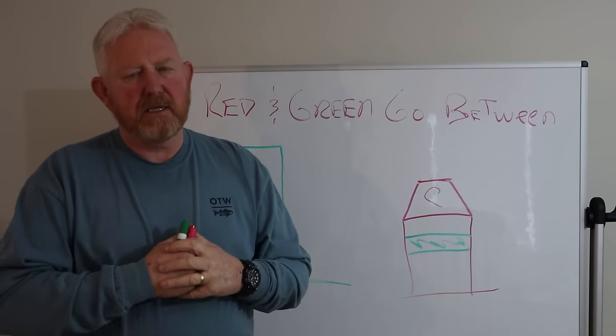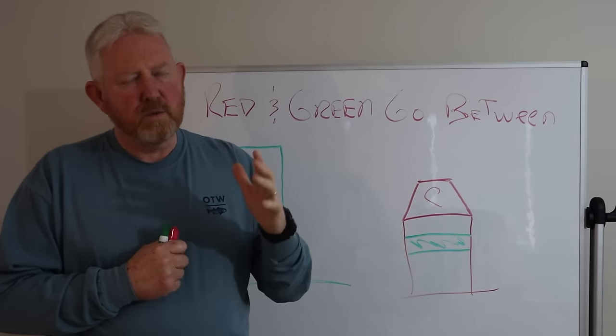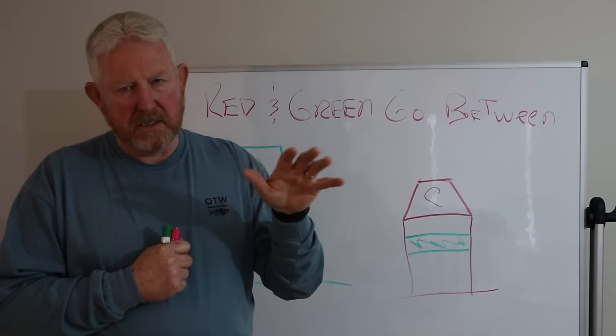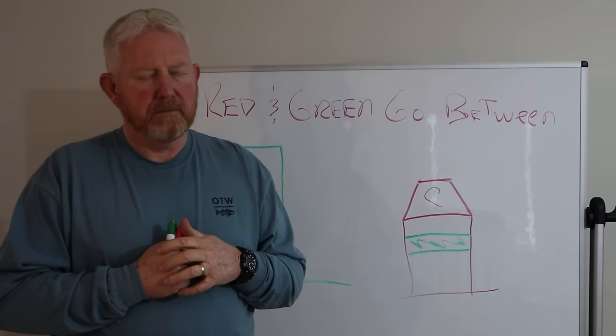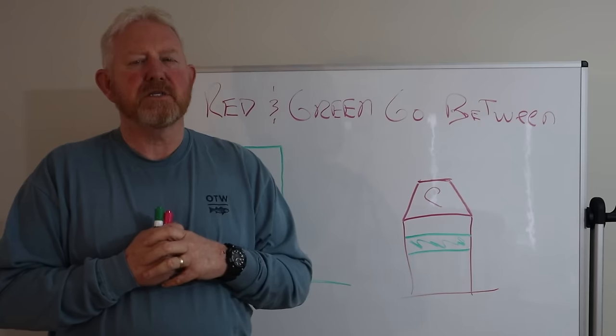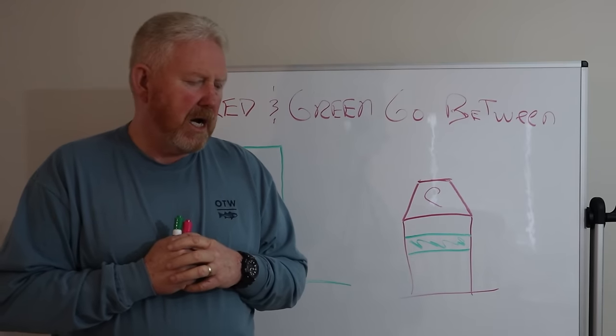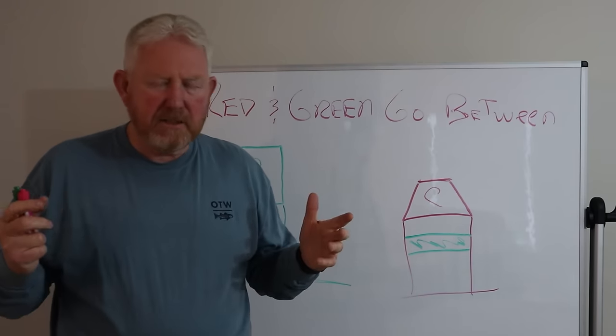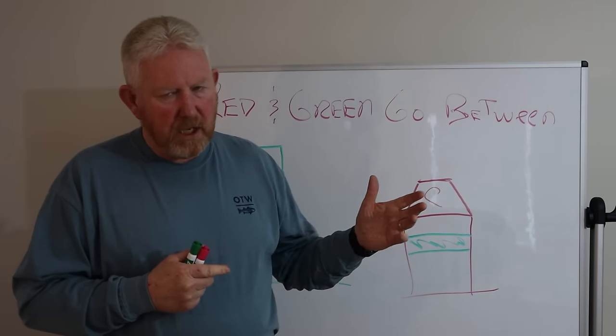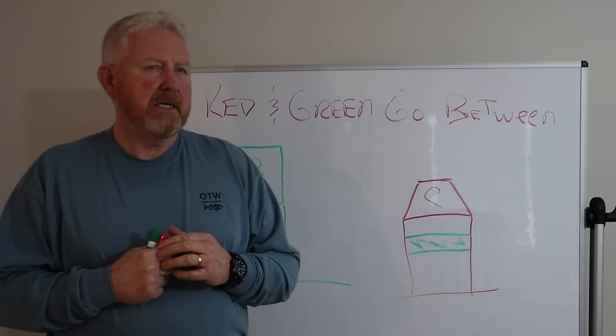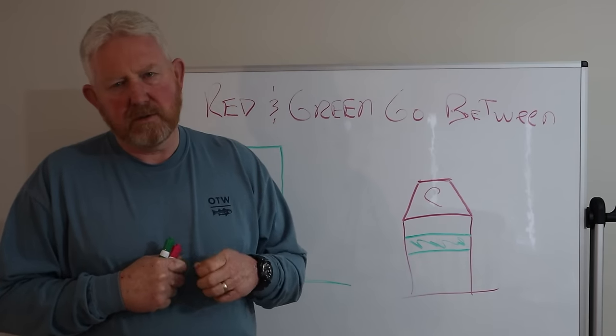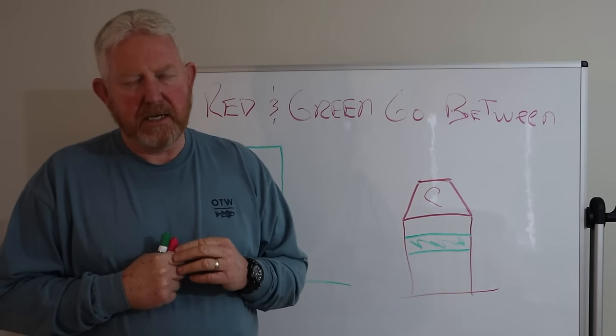So what the Coast Guard is doing now is they've automated these things where if you need that sound producing device, you go to a specific channel, you key the mic, and it'll activate the remote sensor on the lighthouse. And it'll start sounding. So the neighbors don't have to listen to this every three minutes. If you need that, just figure out. It's in the notes on your plotter. But plotters today, you don't really need a lighthouse.